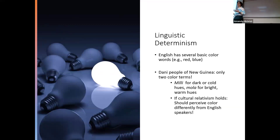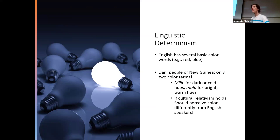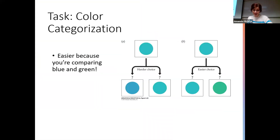In English we have several basic color words: red, blue, green, yellow, orange, and so on. Researchers have studied the Dani people of New Guinea, who have just two color terms — 'milli' for dark or cool hues and 'mola' for bright or warm hues. If cultural relativism and linguistic determinism are true, having only two color words should mean you perceive color differently than people with many color terms.